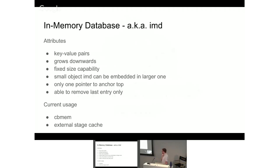First off, the IMD — the in-memory database — which CB-MEM uses now, originally started from dynamic CB-MEM, which we added for relocatable RAM stage. The premise is essentially based on the initial CB-MEM implementation: there are key-value pairs. You can fix the size of the capacity. The difference we added is that it grows downward, which means you can grow as big as you need through boot. There's only one pointer to anchor it at the top; everything else is relative offsets, so there are no fixed pointers within the data structures themselves.